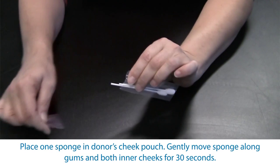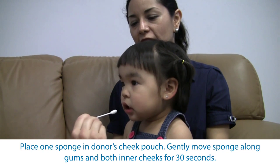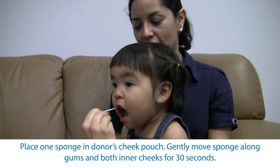To begin, tear open the bag containing the sponges at the notch and remove one sponge. Place the sponge in your child's cheek pouch.